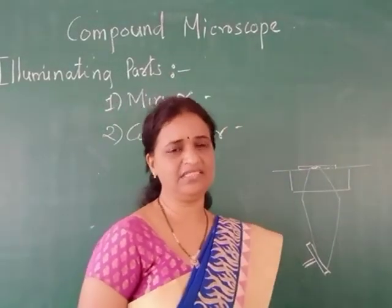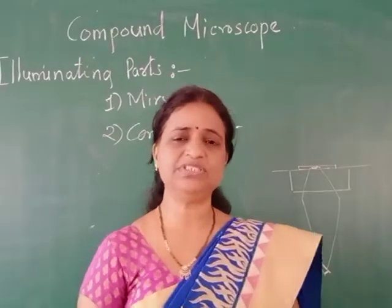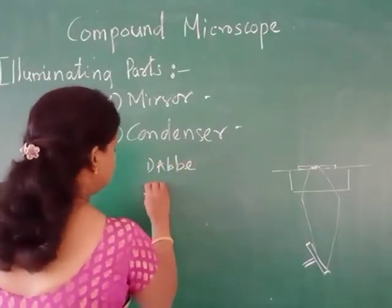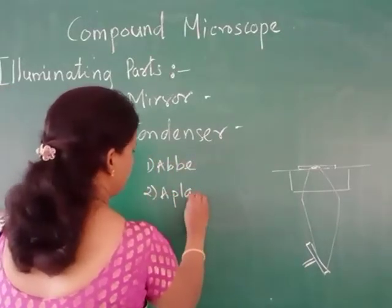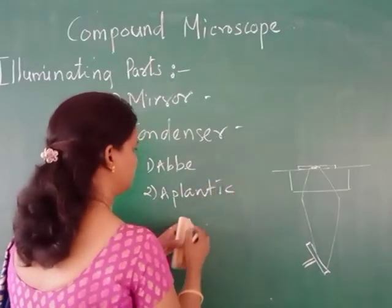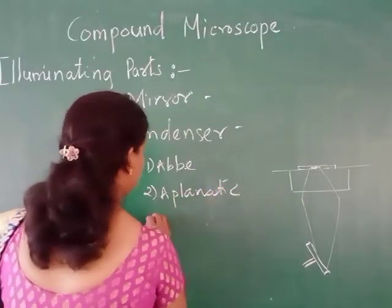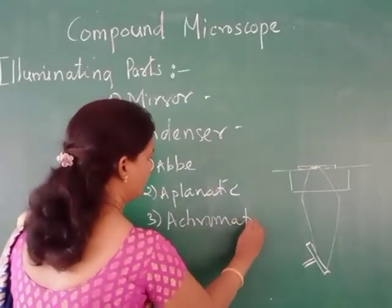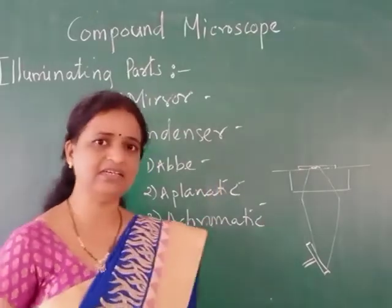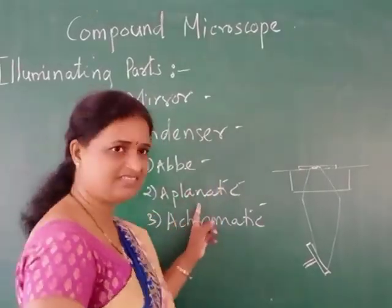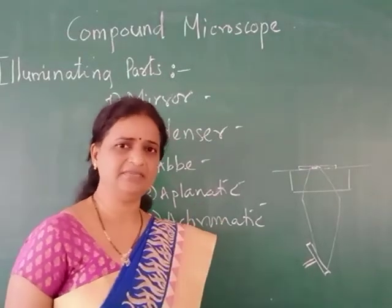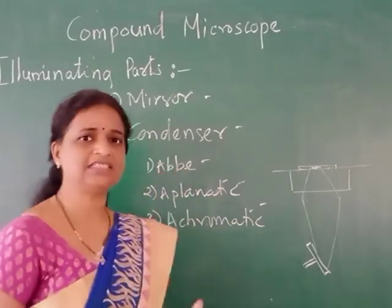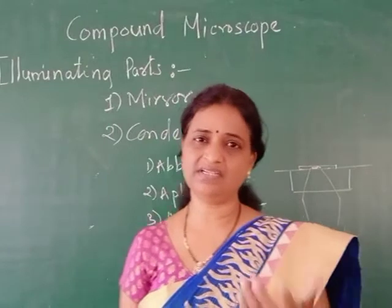There are different types of condensers used in different microscopes: one is the Abbe condenser, the second is the aplanatic condenser, and the third is the achromatic condenser. In the case of the Abbe condenser, certain aberrations are not corrected. The achromatic condenser contains three different plano-convex lenses and is designed to correct for lens aberrations.